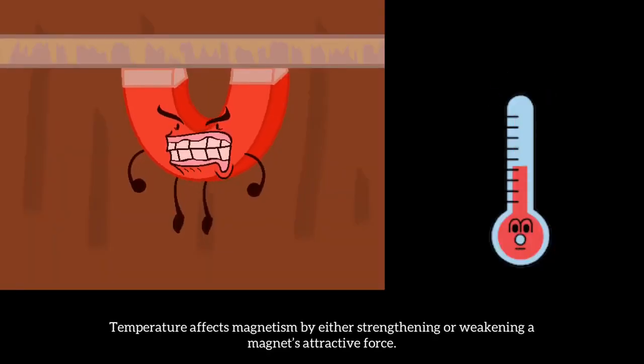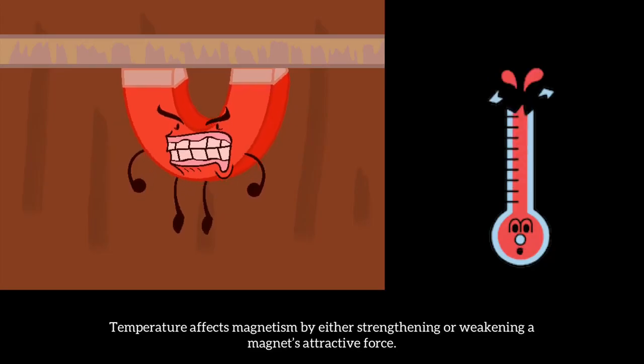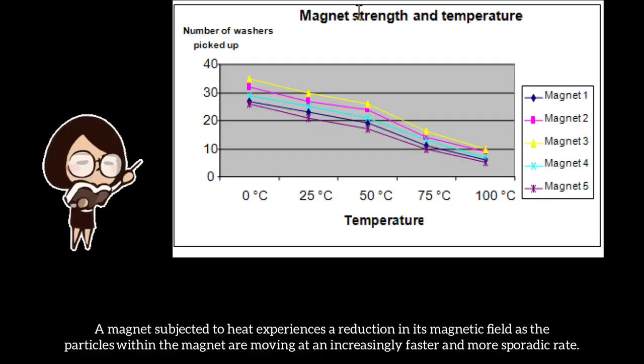Temperature affects magnetism by either strengthening or weakening a magnet's attractive force. A magnet subjected to heat experiences a reduction in its magnetic field as the particles within the magnet are moving at an increasingly faster and more sporadic rate.